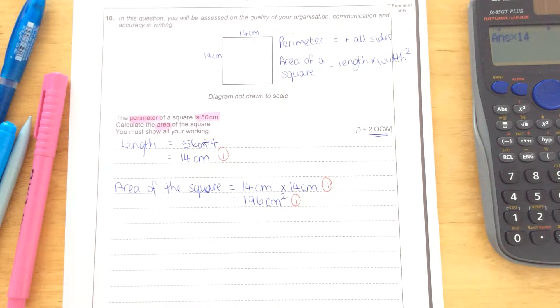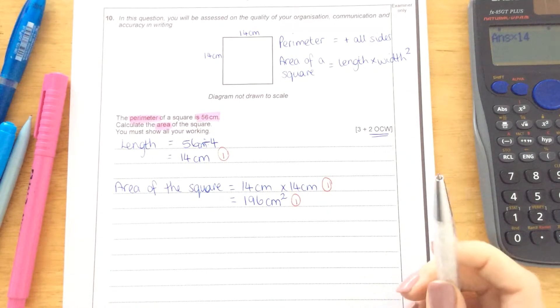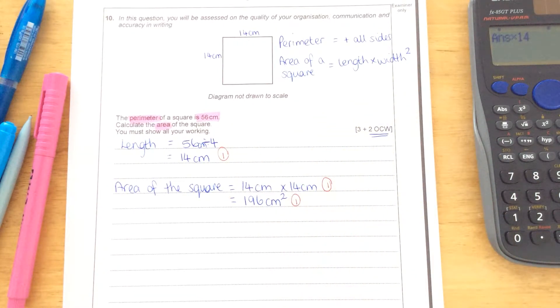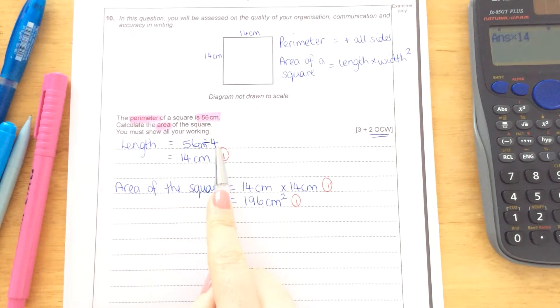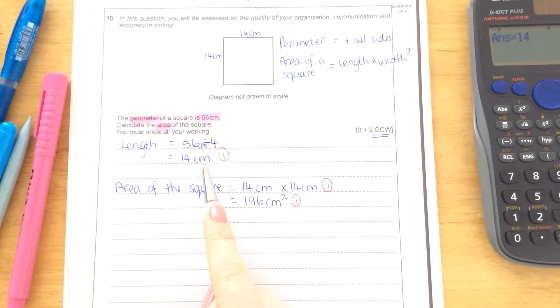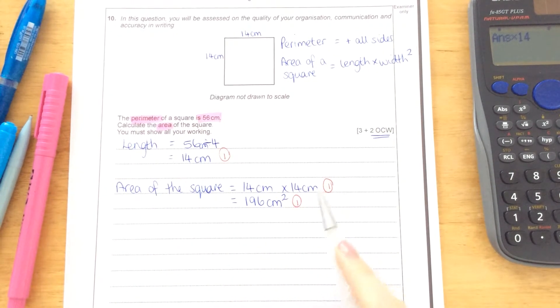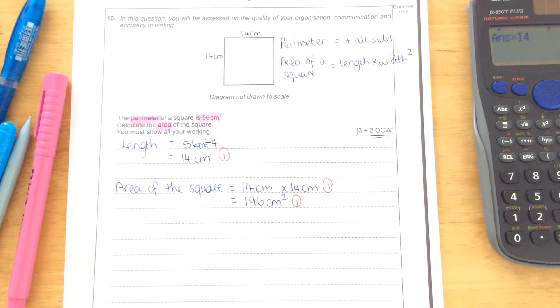The two organisation and communication marks come from how you set your workings out. We have said to the examiner at each stage what we are working out. We're working out the length, shown our calculation, given the units in both the calculation and the answer. We've said at this point what we've done, the calculation we did, the answer with the units as well. So that should get two marks for organisation, communication and writing.